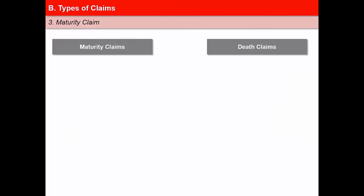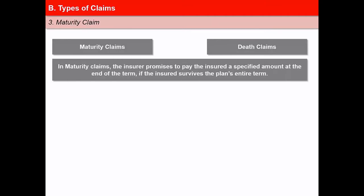Maturity claim and death claim are the types of claims whose payments are made at the end of the policy term, as specified in the insurance contract. In maturity claims, the insurer promises to pay the insured a specified amount at the end of the term if the insured survives the plan's entire term.